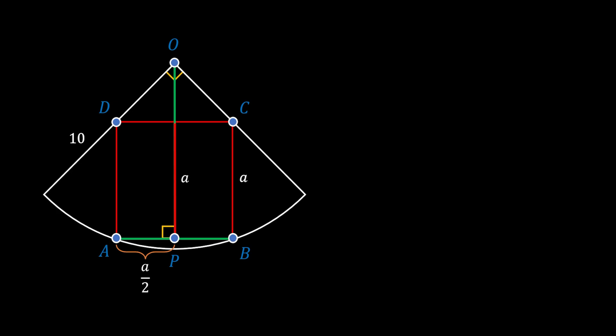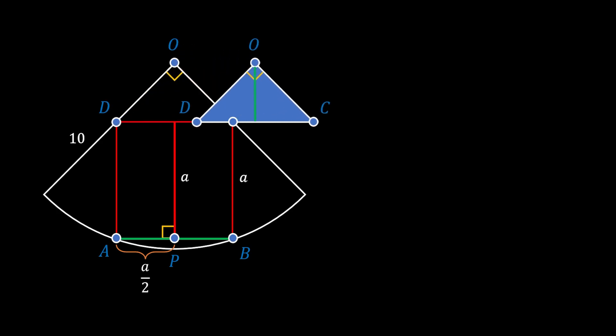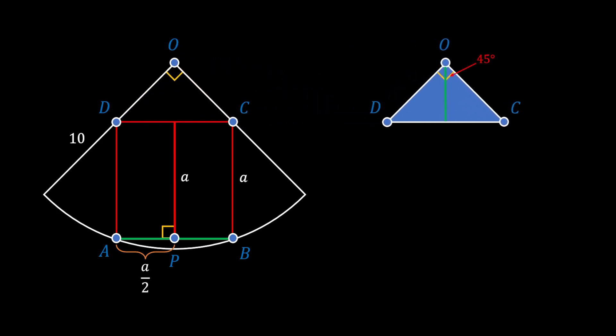Now we will set our attention to the triangle OCD. This triangle is a right triangle, and since lines AB and CD are parallel to each other, the triangle OCD must be an isosceles right triangle. So the perpendicular bisector OP will divide the angle at O into two identical angles of 45 degrees. Now let's isolate this blue triangle. If we look at only half of this triangle, we can see that it will also be an isosceles right triangle.